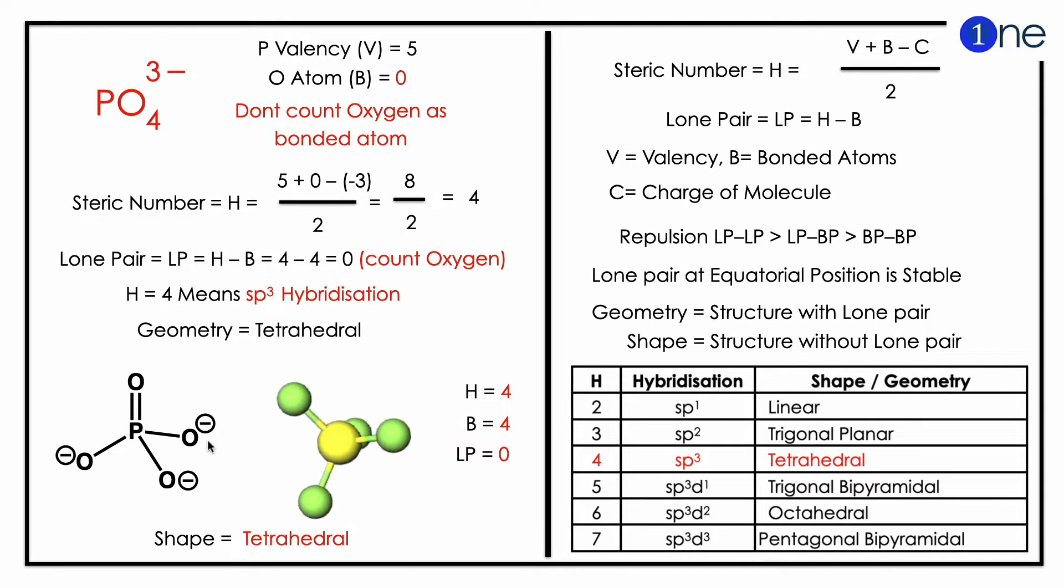With tetrahedral geometry, phosphorus occupies the middle and oxygens are at the corners. You have a perfect tetrahedral structure, so the shape of PO4 3-minus is tetrahedral.